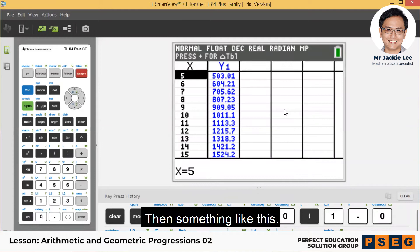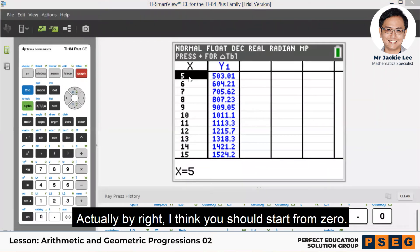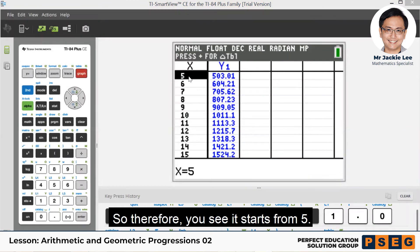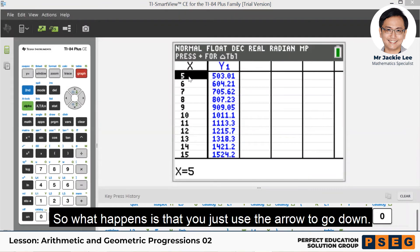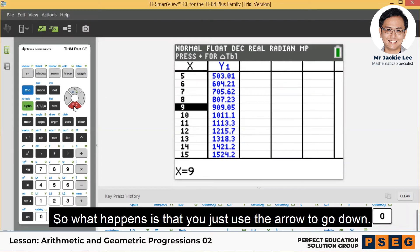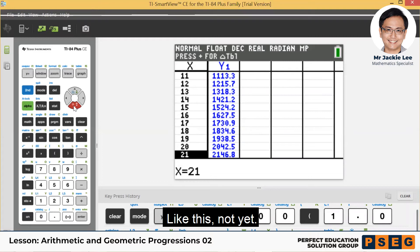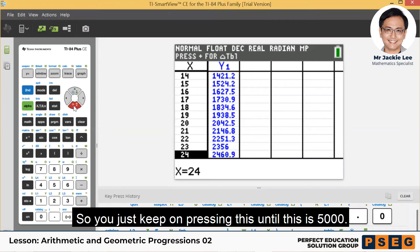Then something like this. Actually by right I think it should start from 0, but somehow maybe last time I started at 5. So what happens, you just use the arrows to go down. You can see the second column, the value not yet. So you just keep on pressing this until this is 5,000.